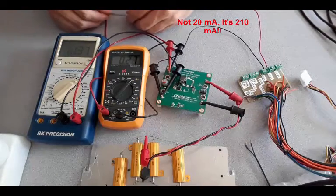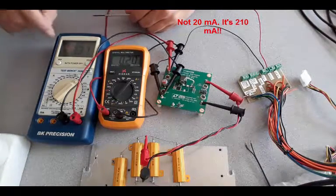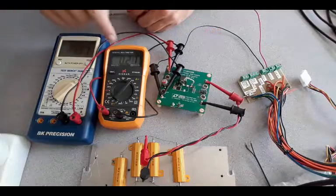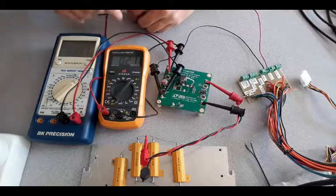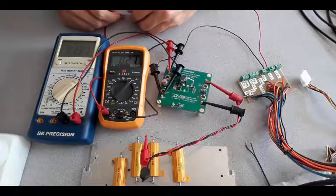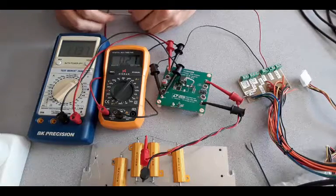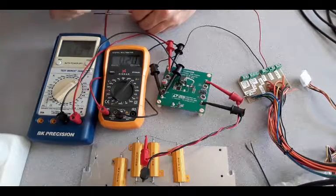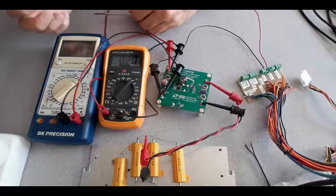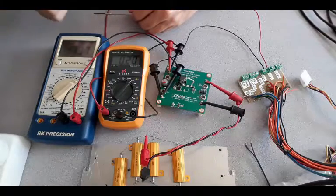This is an interesting property of switching converters. As the input voltage goes up, the input current goes down. And in fact, when you're testing a switching regulator, one of the first basic tests is if you have a variable input supply, to watch and make sure that as you increase the input voltage, the input current goes down.